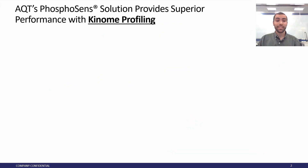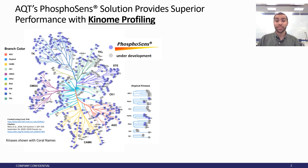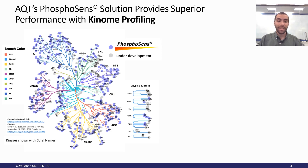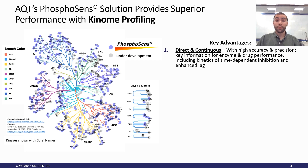Kinome profiling is AssayQuant's compound screening service, using the PhosphoSense technology. It tests all your favorite kinases, ranging from the tyrosines, the CMGCs, the AGCs, and even the atypicals. There are a lot of key advantages to the service, one of which is direct and continuous assays.